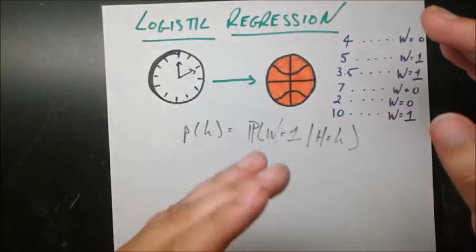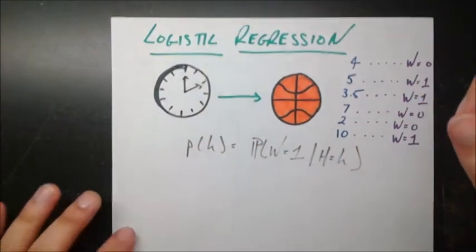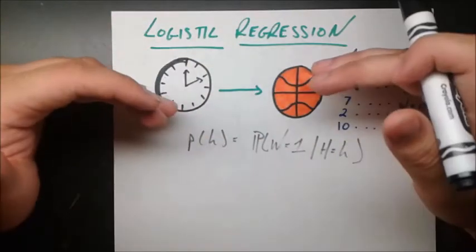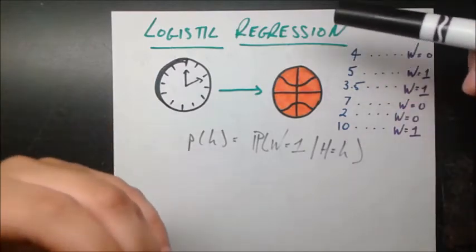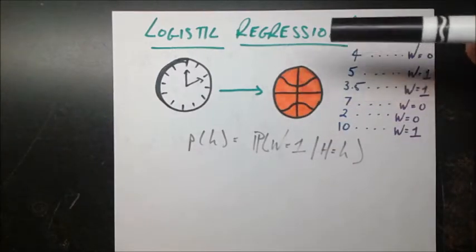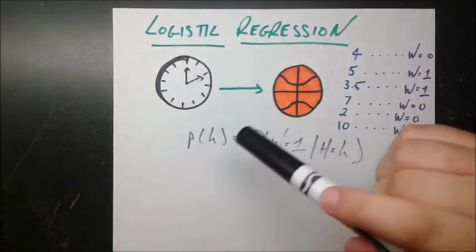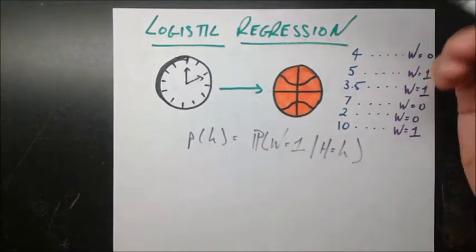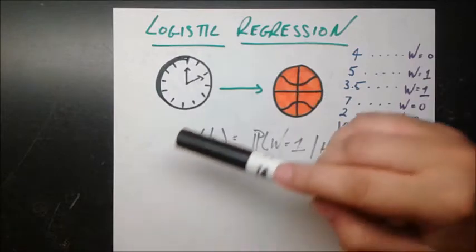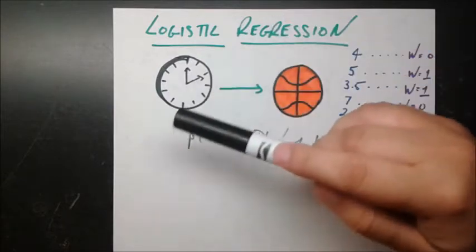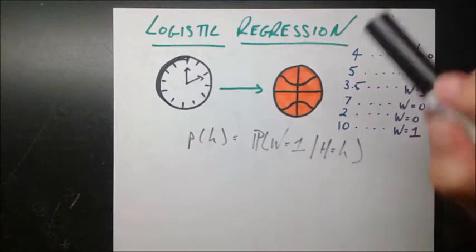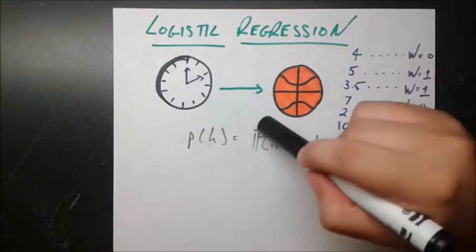For example, maybe it's male or female, or maybe it's passing a test versus failing a test. In this example, we're going to predict whether a basketball team will win a game based on how many hours they've practiced. So our explanatory variable is still continuous — it's how many hours you practice, which can be 1 hour, 2 hours, or anything in between.